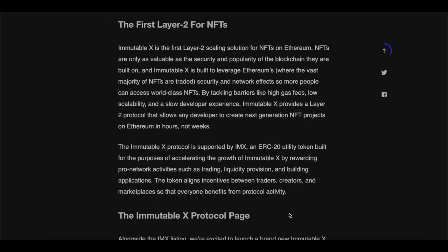Immutable X is the first layer 2 scaling solution for NFTs on Ethereum. NFTs are only as valuable as the security and popularity of the blockchain they're built upon, and Immutable X is built to leverage Ethereum where the vast majority of NFTs are traded. The Immutable X ecosystem is supported by IMX, an ERC-20 utility token built to accelerate growth by rewarding pro-network activities such as trading, liquidity provision, and building applications. The token aligns incentives between traders, creators, and marketplaces so that everyone benefits.